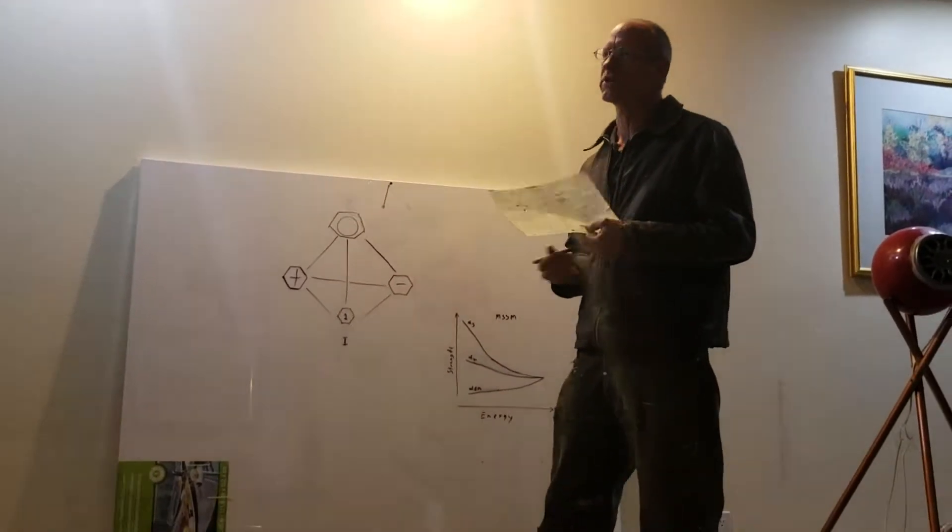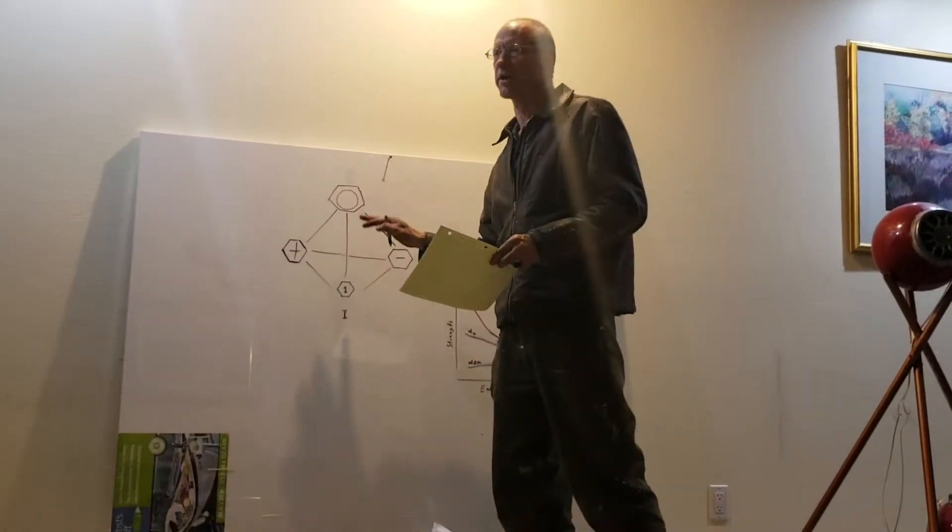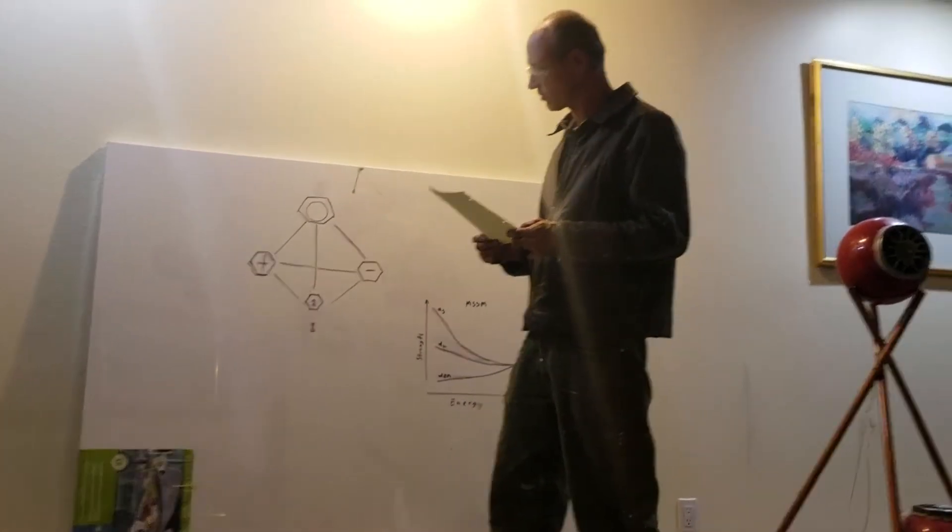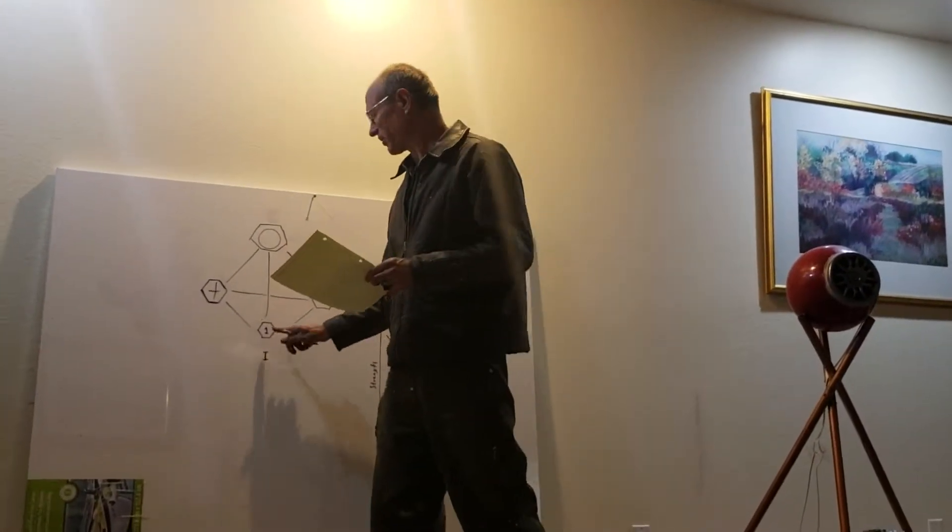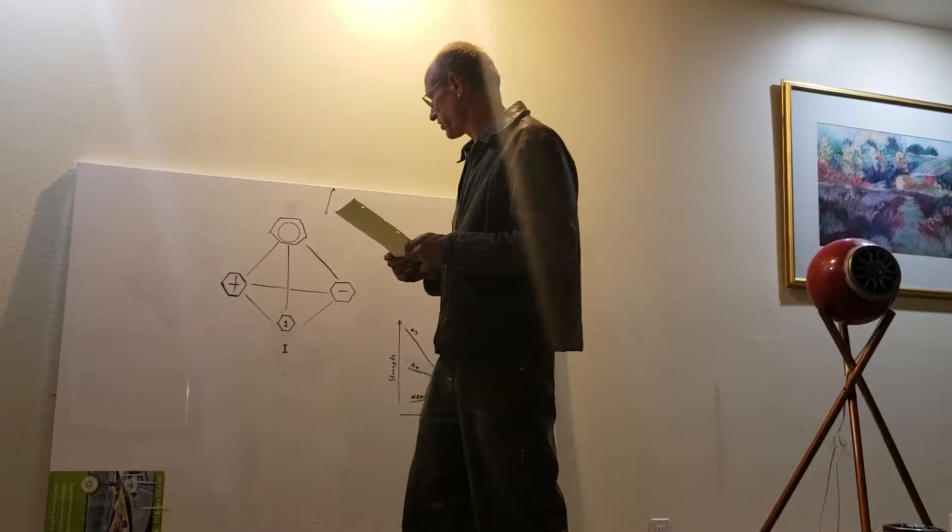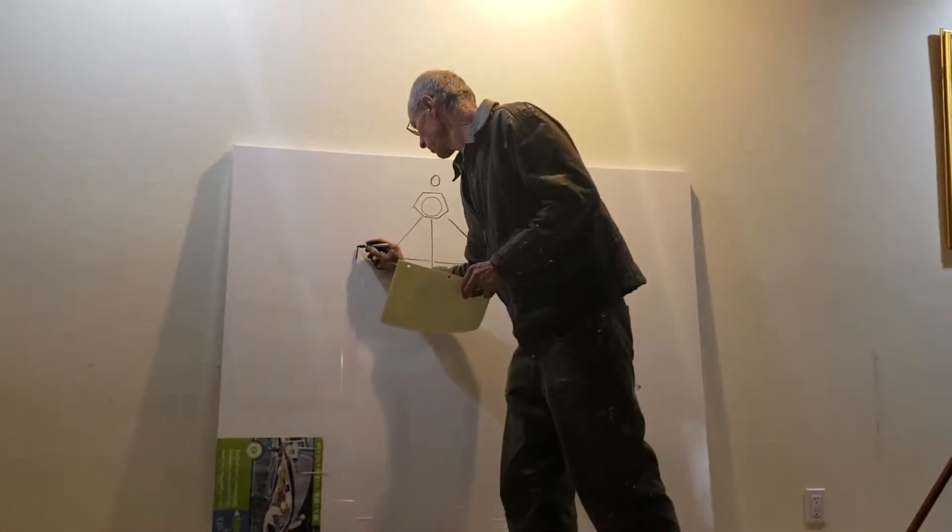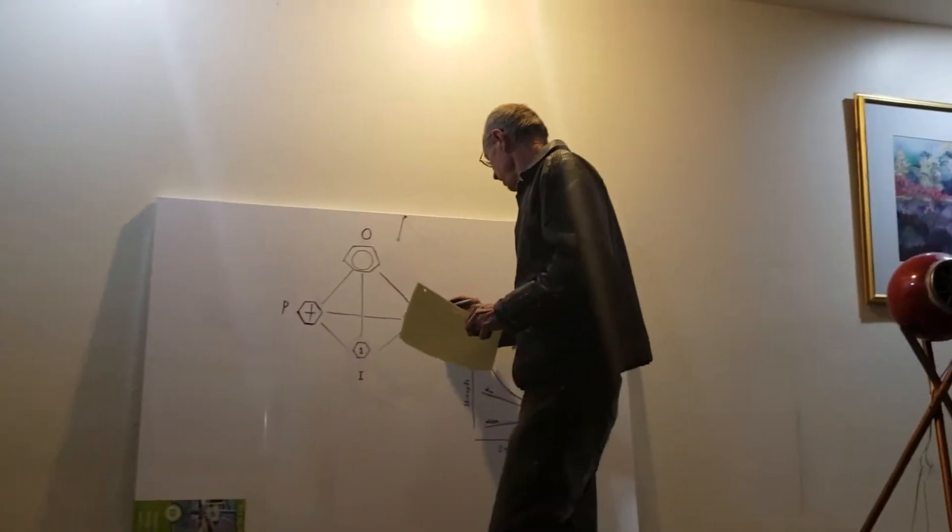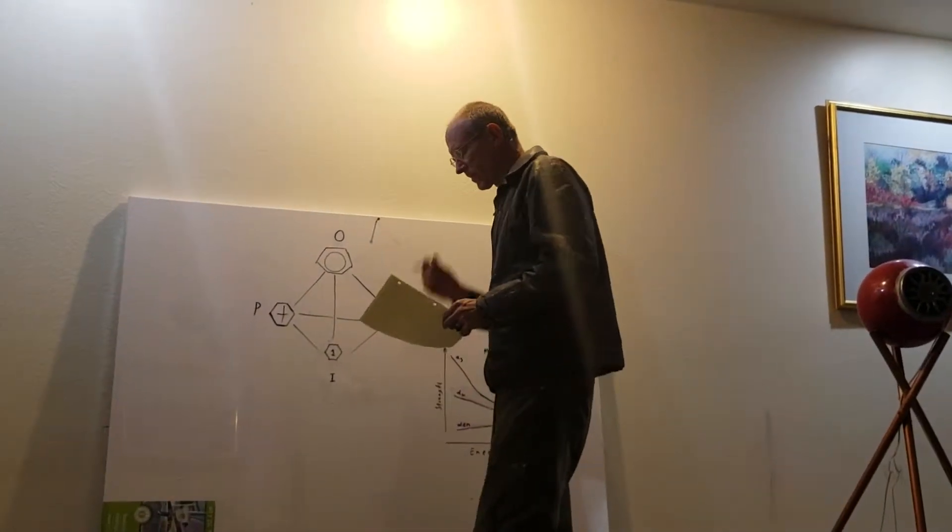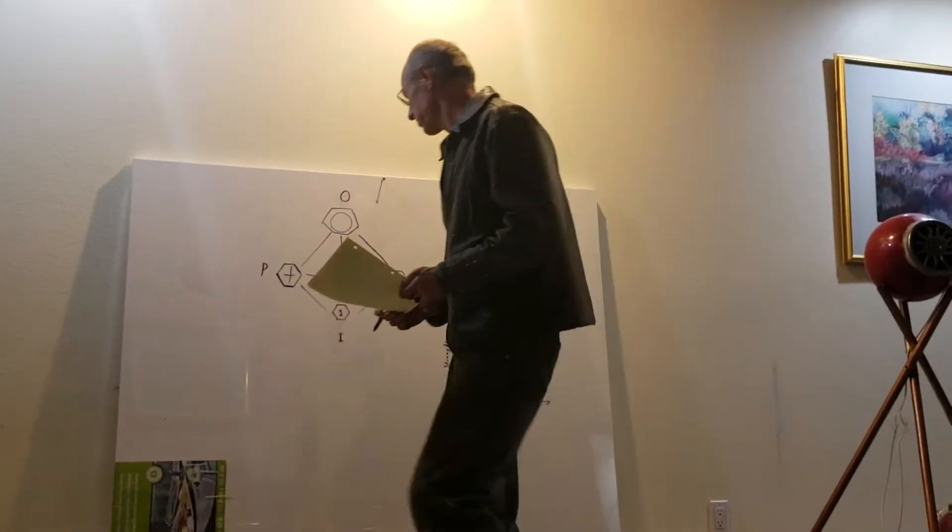First, we need to understand this graph. We'll write it as an equation in Boolean algebra. So, we would assign letters I to one, and on the top here, we'll just go with O. P over here for positive, and over here for negative, and then we write that as a Boolean algebra equation.